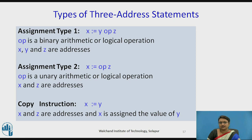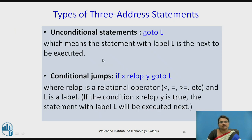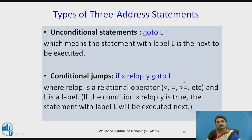Now let us talk about the types of three-address statements. The first type is Assignment Type 1, a binary operation: x = y op z, where x, y, and z are addresses. Assignment Type 2 is a unary operation with one operator and operand. There is also a copy instruction: x = y. Next is the unconditional statement: goto L, where a label is used. For a conditional jump: if x relop y goto L, where the relational operator may be less than, equal to, greater than, or other relational operators.